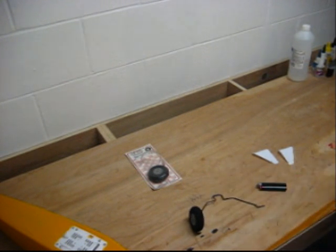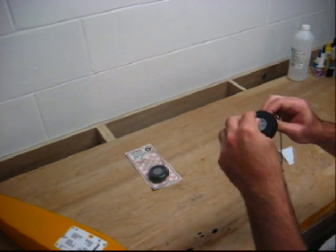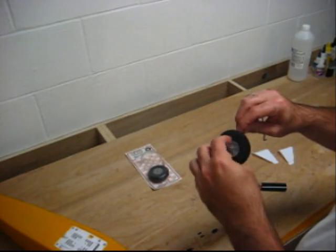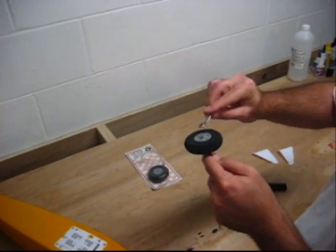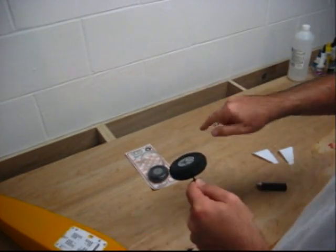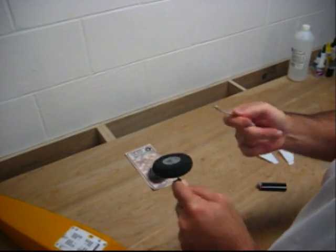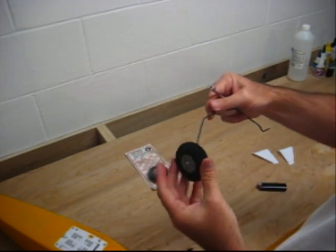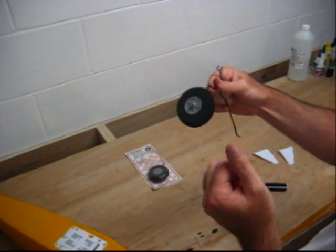Then it's just a matter of getting yourself a 440 nut and tightening it down. Here's our 440, it's just a steel lock nut. It's just a matter of tightening this down. And that wheel's done. It's just that simple.